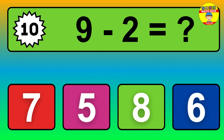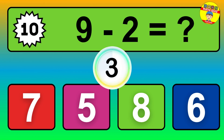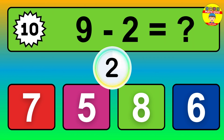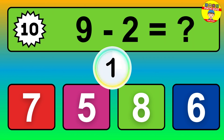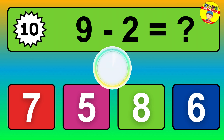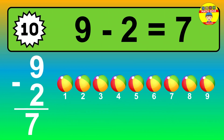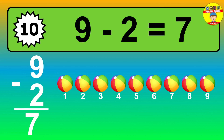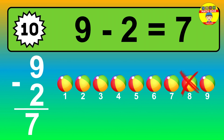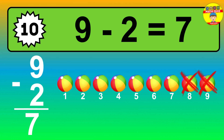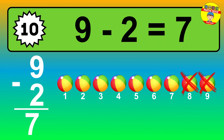Question 10. 9 minus 2 equals what? The answer is 9 minus 2 is 7. Let's count it. 1, 2, 3, 4, 5, 6, 7.